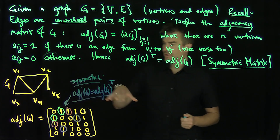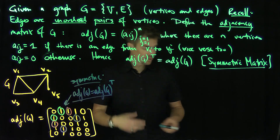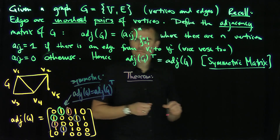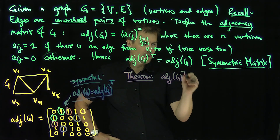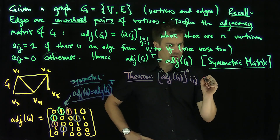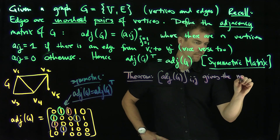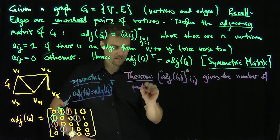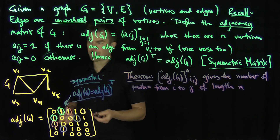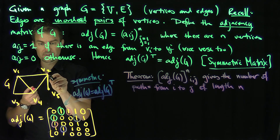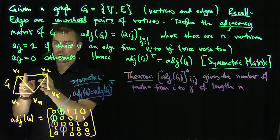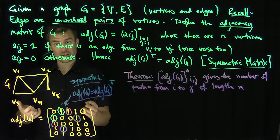There's also another very important property of adjacency matrices: when you raise them to a power, you get the number of paths from one vertex to another. Here's our next theorem: if I take the adjacency matrix of a graph G and raise that matrix to the power n, then the i,j entry gives the number of paths from i to j of length n. For example, in this graph, the adjacency matrix entry for v1 to v2 is 1, because there's one path of length 1 — a direct edge between those two vertices.